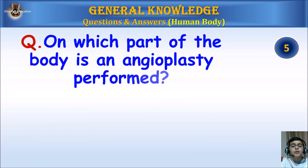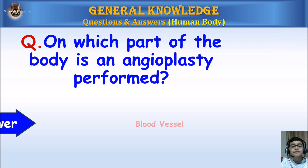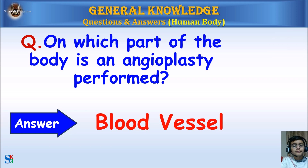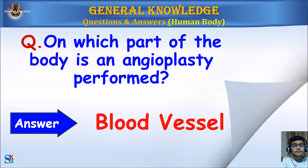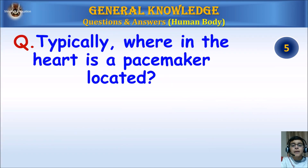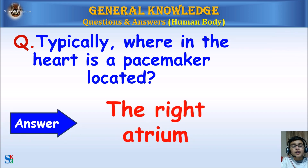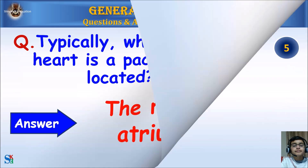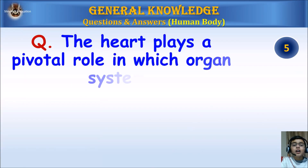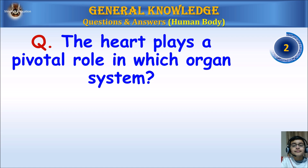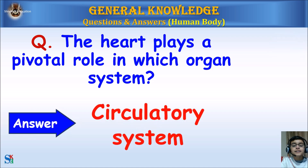On which part of the body is an angioplasty performed? Answer: Blood vessels. Typically, where in the heart is a pacemaker located? The heart plays a pivotal role in which organ system? Answer: The circulatory system.